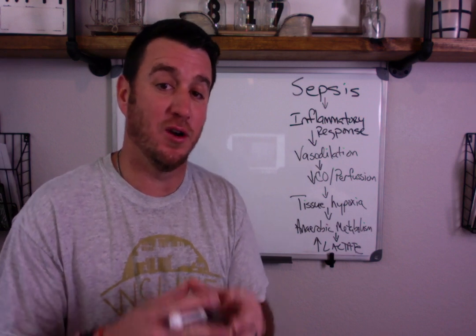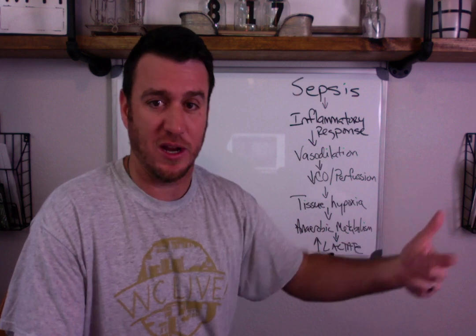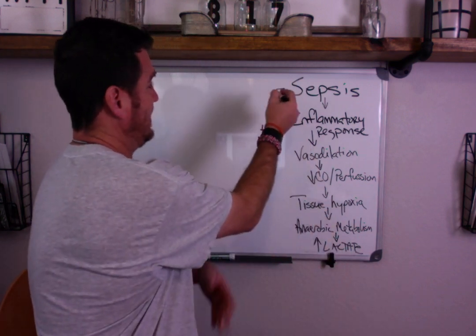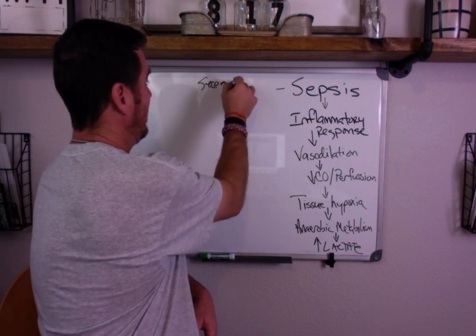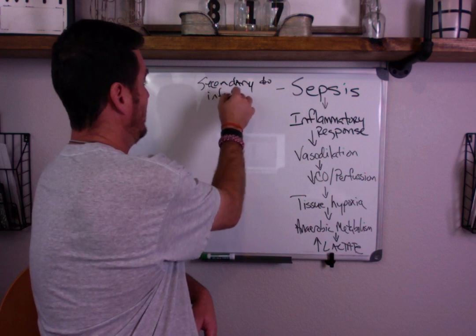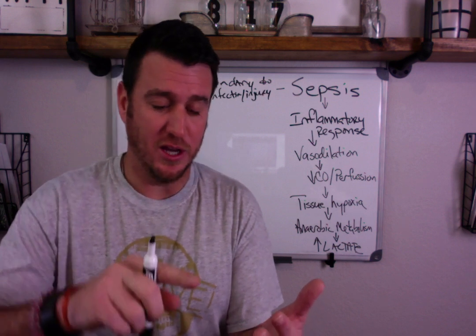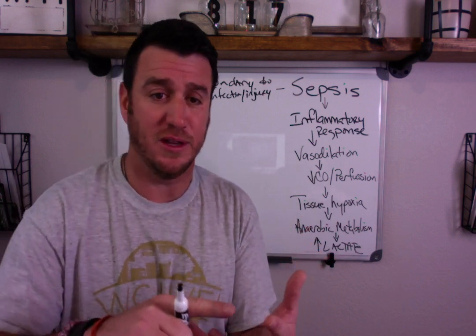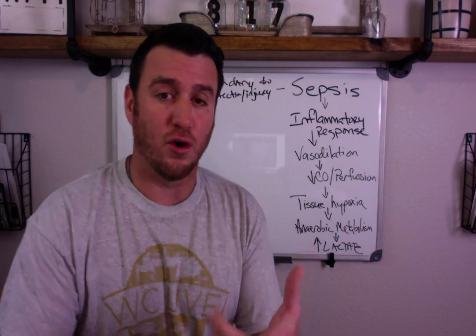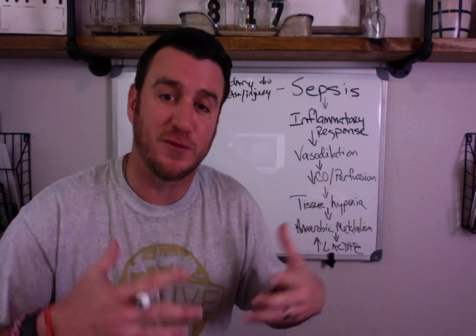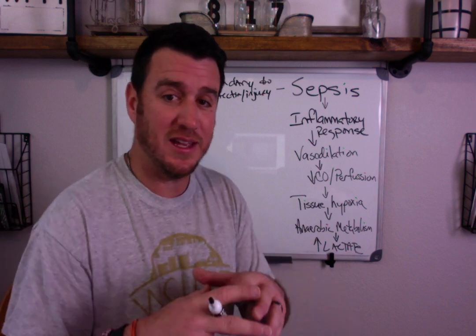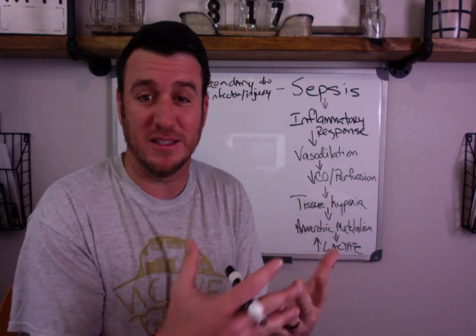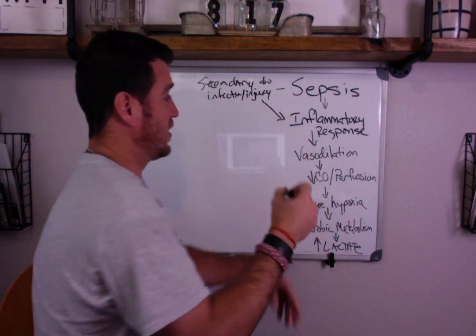Let's break down what's happening here when we talk about these words. When we talk about sepsis, we know it's typically secondary to infection or injury. So you're talking about things like urinary tract infections, ventilator-acquired pneumonia, your MVC patient who comes in and develops ARDS, your organ transplant patient, your patients who are immunocompromised. Anything that creates an opportunity for an infection or an injury to be present in the body sets off the inflammatory response system.